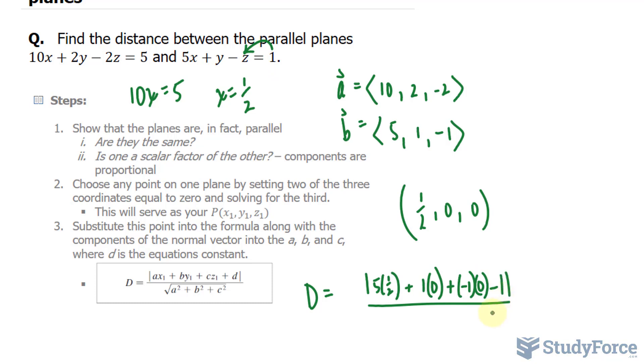All divided by the magnitude of the normal of that equation, which we found to be 5, 1, and negative 1. So the magnitude is 5 squared plus 1 squared plus negative 1 squared square root.